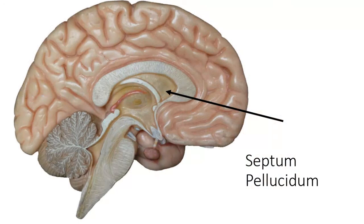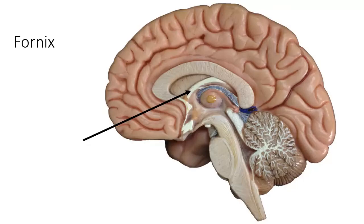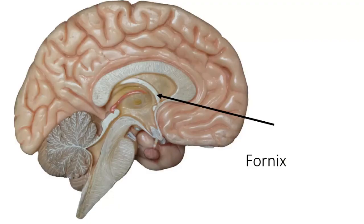The septum pellucidum separates the two lateral ventricles. Another structure is this white line called the fornix. The fornix is part of your limbic system. The limbic system is what governs your emotions — fear, happiness, joy, that kind of thing. We'll get into more of that discussion. Here's the fornix on this other model.